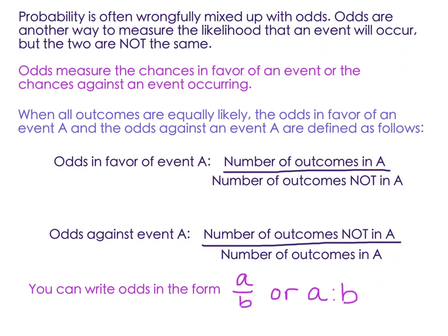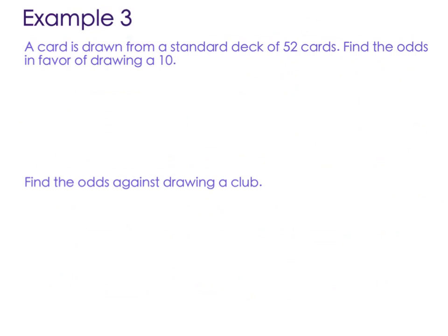Odds measure the chances in favor of an event, or you can say the odds against an event occurring. When all outcomes are equally likely, the odds in favor of an event A and the odds against an event A are defined as follows. The odds in favor of an event are going to be the number of outcomes in A over the number of outcomes not in A. And the odds against would be just the opposite. So if I said the odds against you winning, then you would say like 250 to 1, where the odds for you winning would be 1 to 250. So when it's against, it's the not A on top. And odds are written in the form A over B or A colon B. They're written as a fraction or a ratio, but you are not going to put them as a decimal or a percent. We don't give odds as a percentage because it's not part out of whole.